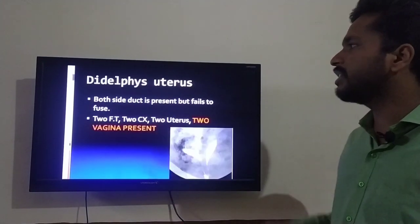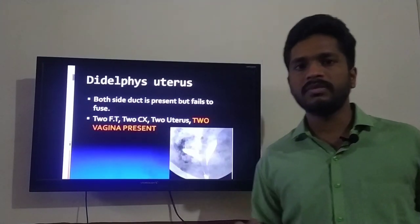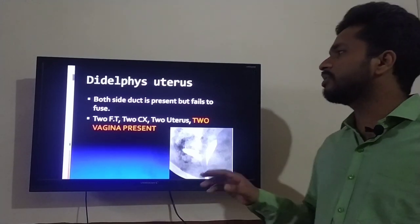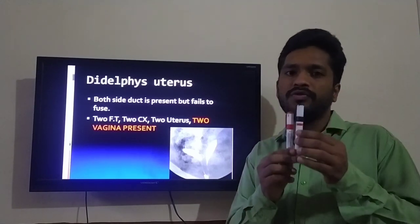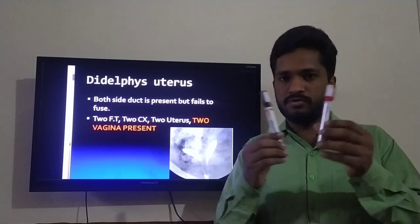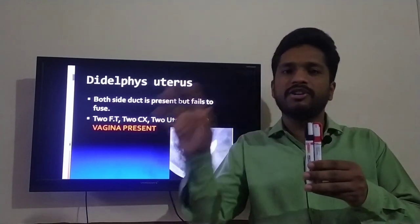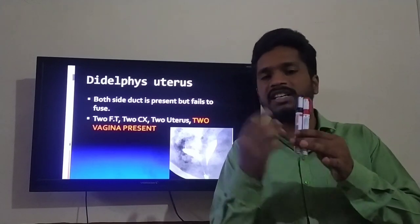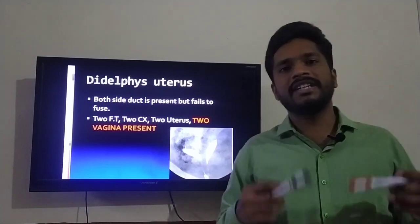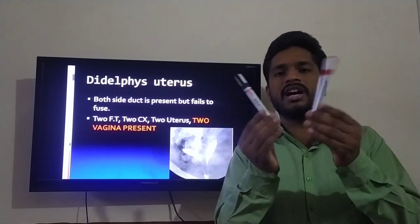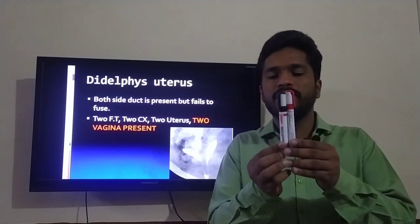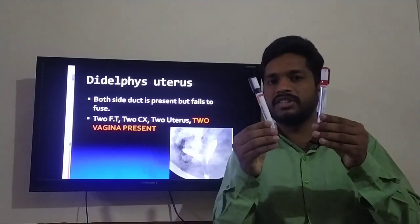Next, we will talk about didelphys uterus, which is Class III. In didelphys uterus, both ducts are present but they fail to fuse. Normally, both ducts fuse together at the tenth week of gestation. The fallopian tubes are two, but the uterus and cervix should be just one in a normal female. In didelphys uterus, because fusion does not occur, these two structures remain separate.